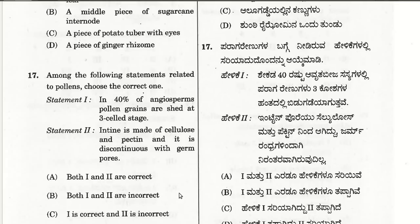The seventeenth question: among statements related to pollens, choose the correct one. Statement one: in 40% of angiosperms pollen grains are shed at three-cell stage. Statement two: intine is made up of cellulose and pectin and it is discontinuous with germ pores. The answer: statement one is correct and statement two is incorrect.